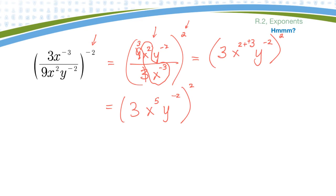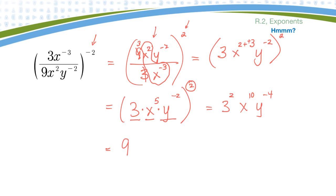Now I could take care of that negative exponent, or I could wait till I square everything. Let's square everything first. The three, x to the fifth, and y to the minus two are all separate terms, so each needs to be raised to that exponent. So it would be three to the two, x to the two times five which is ten, and y to the minus two times two which is minus four. Three squared is nine, x to the ten stays, and the negative exponent on y I should change to the bottom and make it positive.